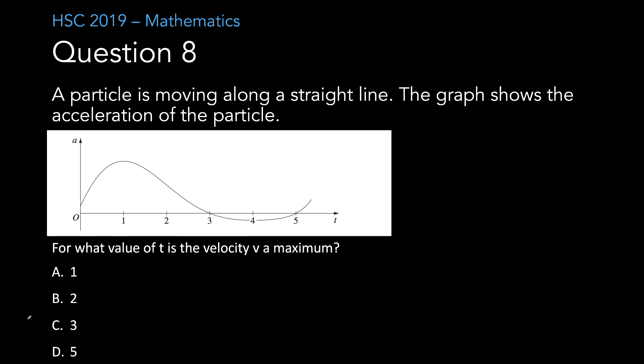Question 8. A particle is moving along a straight line. The graph shows the acceleration of the particle. For what value of t is the velocity v a maximum? I've got an acceleration versus time graph. I need to remember acceleration is the derivative of velocity. From that, I know that my maximum or minimum velocity is going to occur when a is equal to 0, because when I differentiate my velocity, in order to get a maximum or minimum of that, I need to set it to 0. So I can tell when my acceleration is 0, my maximum velocity is going to be at t is equal to 3. So the answer is C.